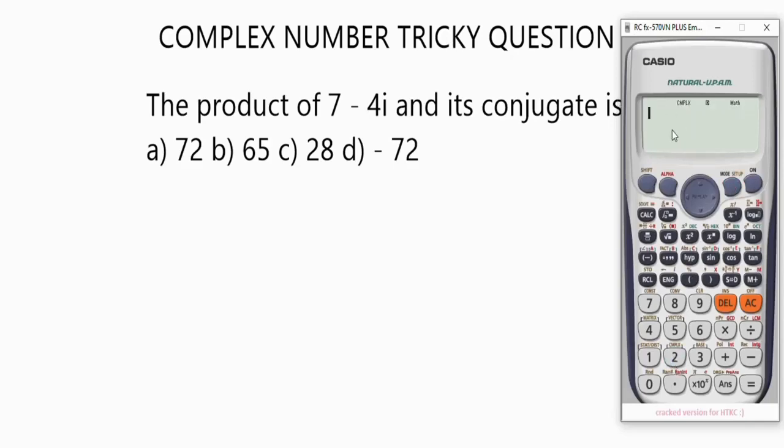Now that it is in complex mode, you need options under this complex mode. To bring out the options, check your calculator carefully. On button two, on top of it is complex. Press shift, then the button. The options have a command.